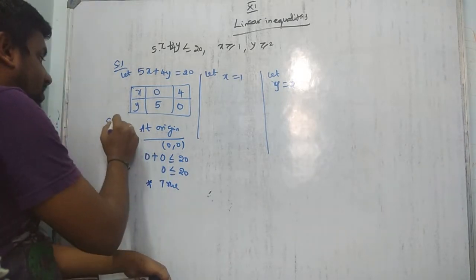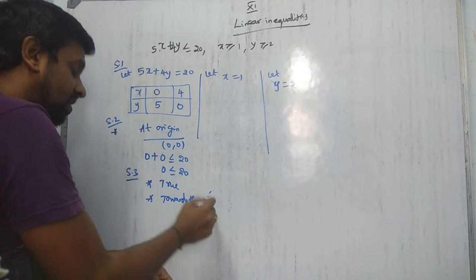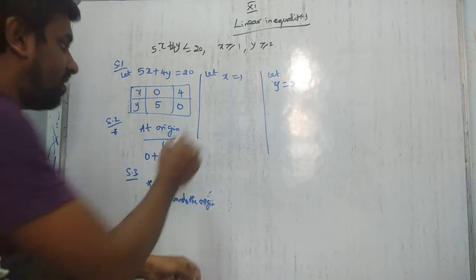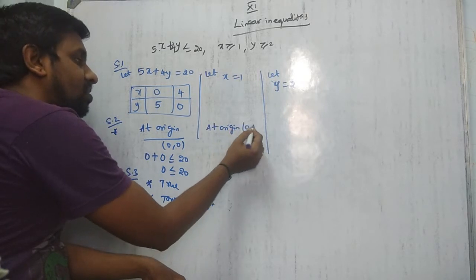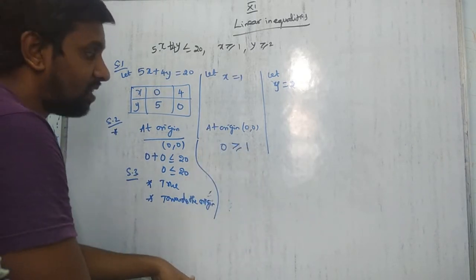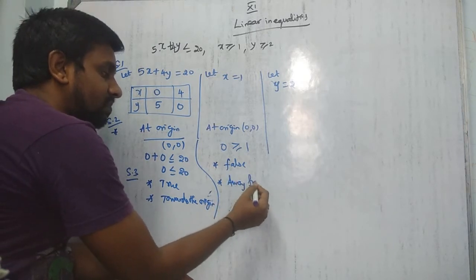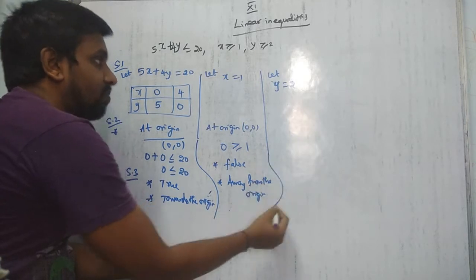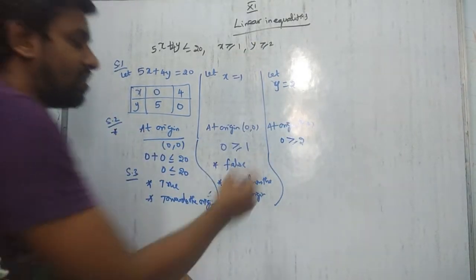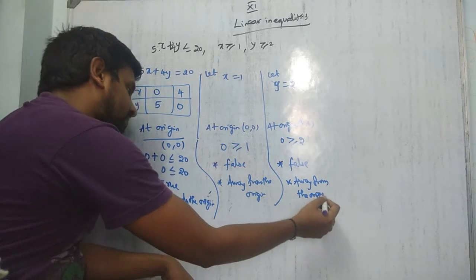Similarly for y ≥ 2: substitute (0,0) → 0 ≥ 2. False. So shade away from the origin. Step 3: True means shade towards the origin; false means shade away from the origin. Collect all this data for every sum in the exercises.